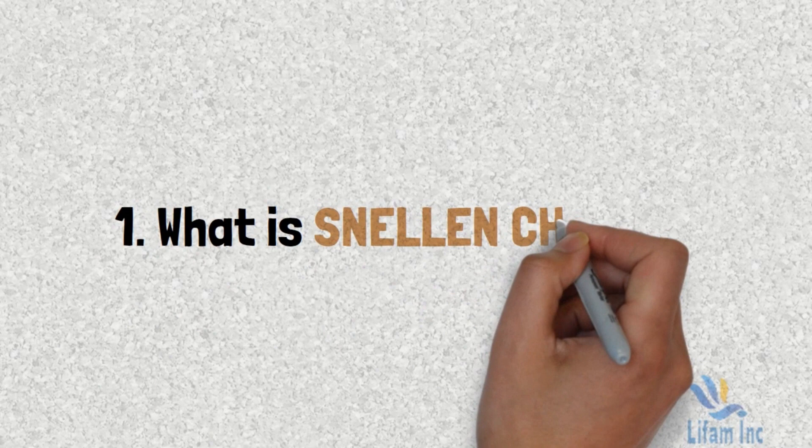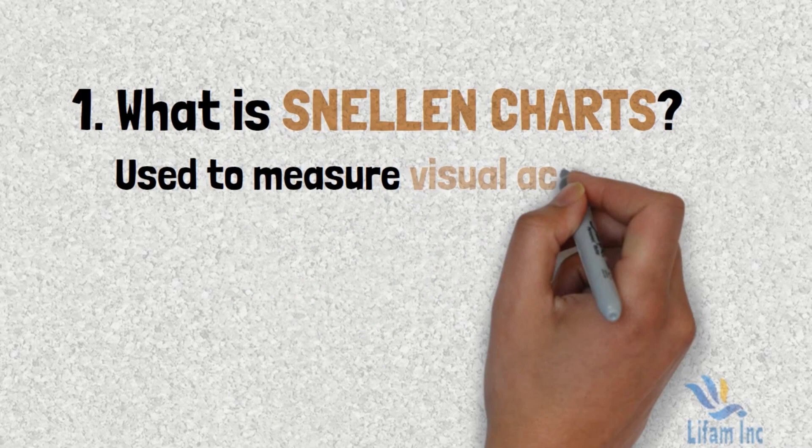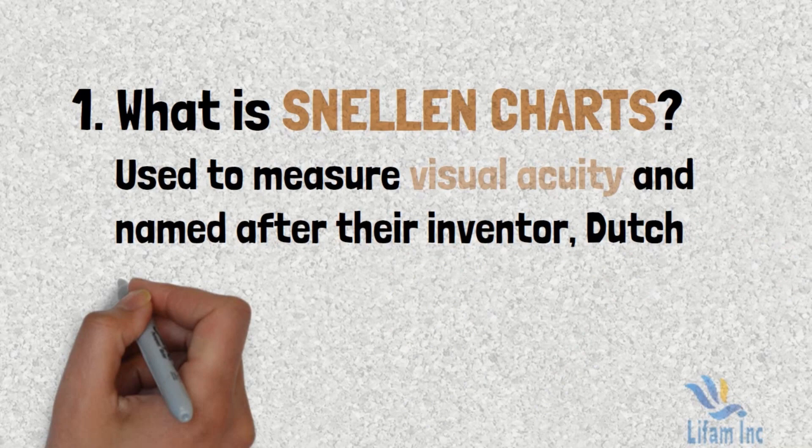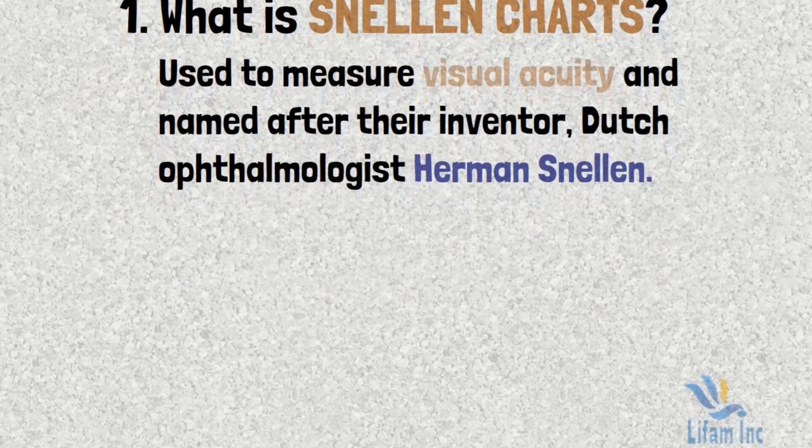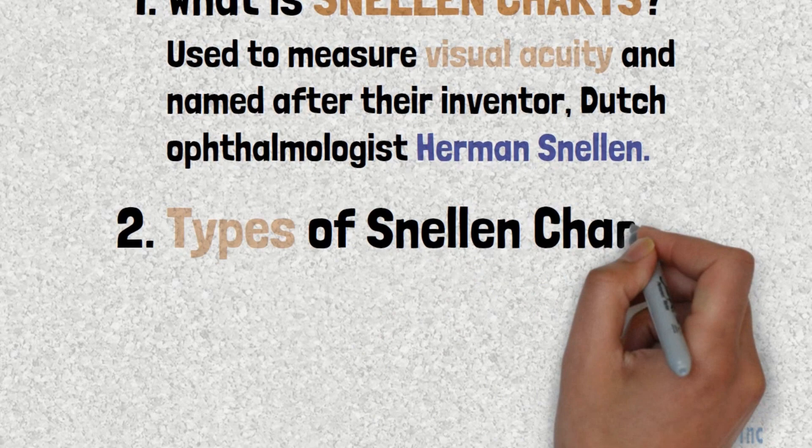The Snellen chart is a visual chart used to measure visual acuity, named after the Dutch ophthalmologist Herman Snellen.